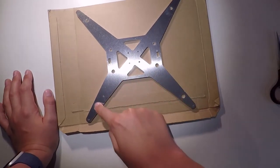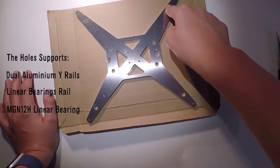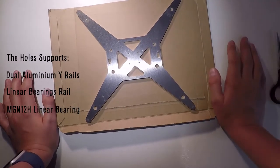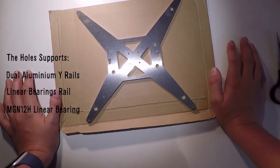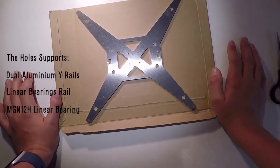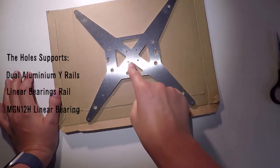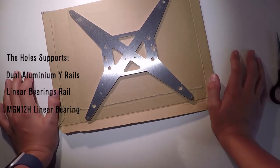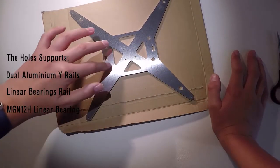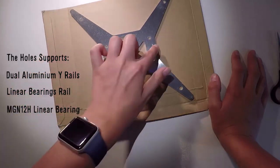And then these holes are used for linear bearings, dual wire rails, and something else I can't remember, but I will list it on screen. This is for an MGN12 rail, like the one featured in Rurator's video. And this too. This is for the belts.